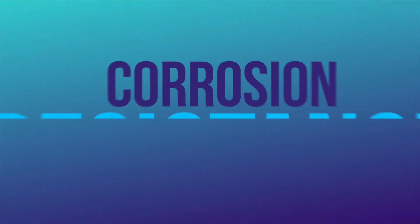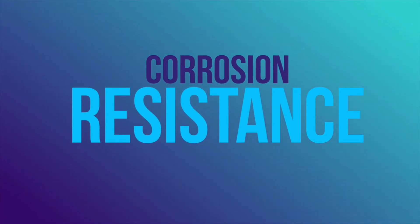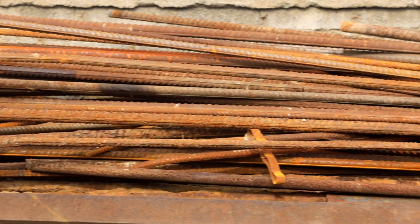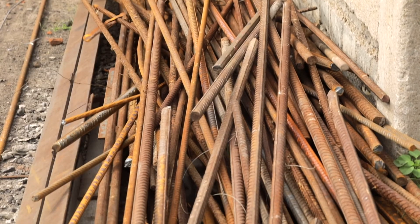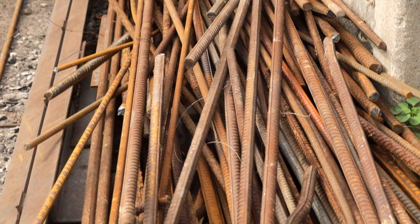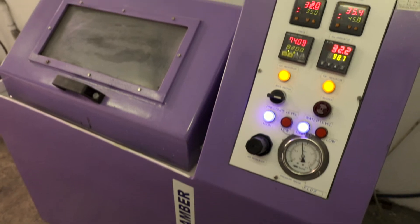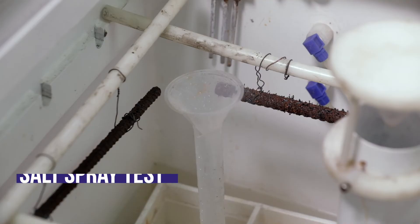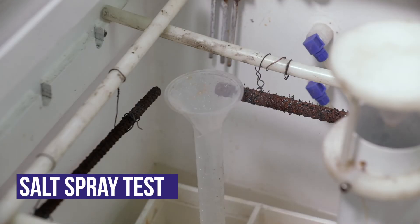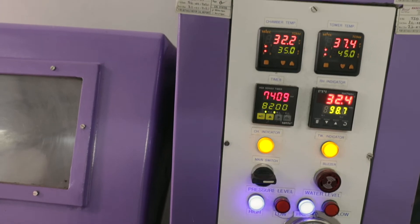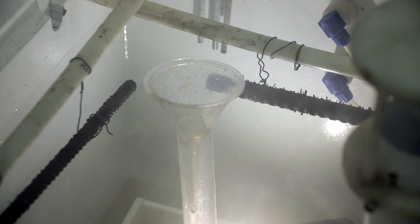Corrosion Resistance: Another important physical attribute to be checked is corrosion resistance. Testing corrosion resistance through a salt spray test gives the rate of corrosion, thereby revealing the life of the steel.